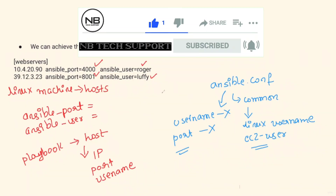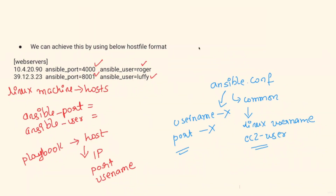This is how you can tackle this problem. In the interview, if we encounter such a scenario, we can add ansible_port and ansible_user parameters along with the IP information in the host file. By doing so, Ansible will also pick this information when it applies the playbook on these machines, and it will use the respective port and username to log in. That's it for this topic — hope you've understood how to tackle these questions if they appear in the interview.